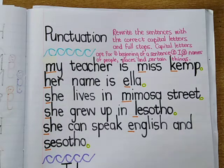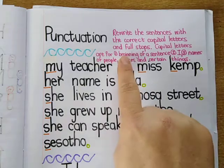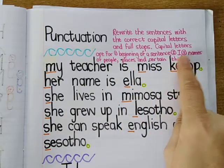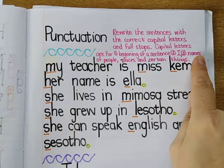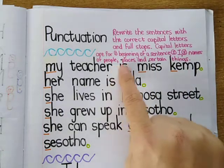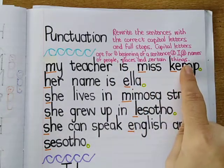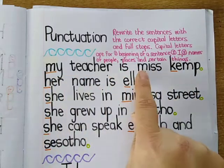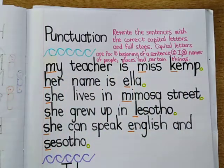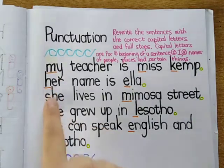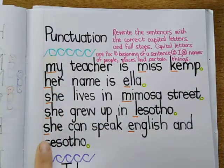Remember, capital letters are for the beginning of a sentence, for the word I, and for the names of people, places, and certain things. I've helped you again with some orange lines. The beginnings of sentences always get a capital letter.